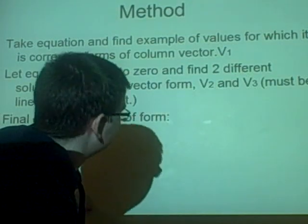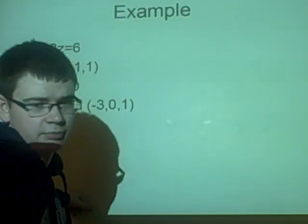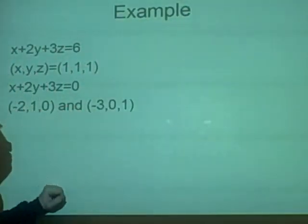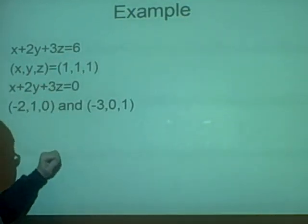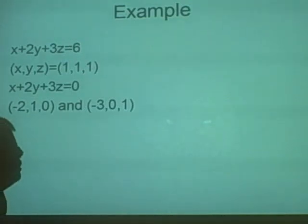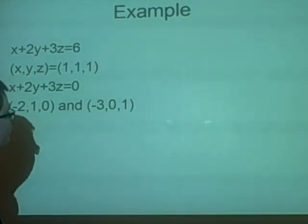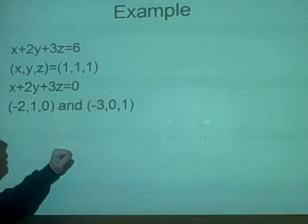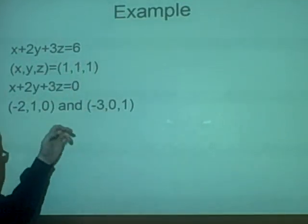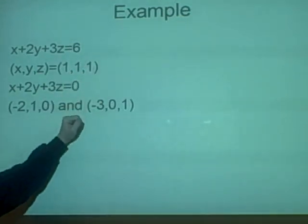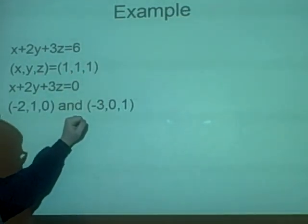So I have a quick example. And examples always make things clearer. So we have x plus 2y plus 3z equals 6. Now first, we have to guess a solution. So if we want x, y and z, we could guess 1, 1, 1. As we could have 1 plus 2 plus 3 is 6. So that works. And we have our matrix there. And that works fine.